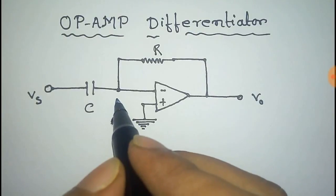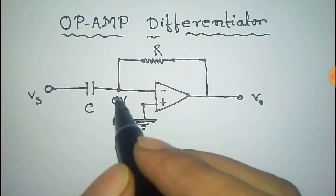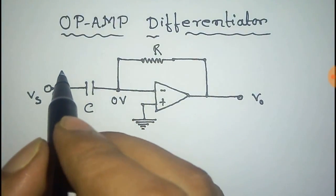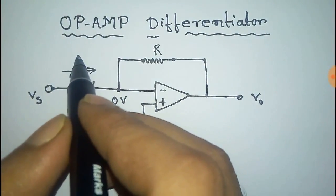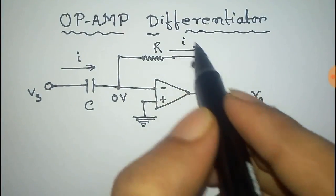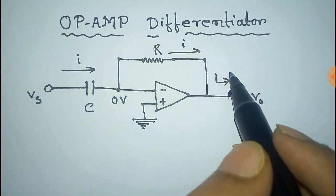Now this is the virtual ground, so it is at zero voltage. From this we say that if the current in this circuit is i, this is the same as in this circuit, the current is i. This is the same i.